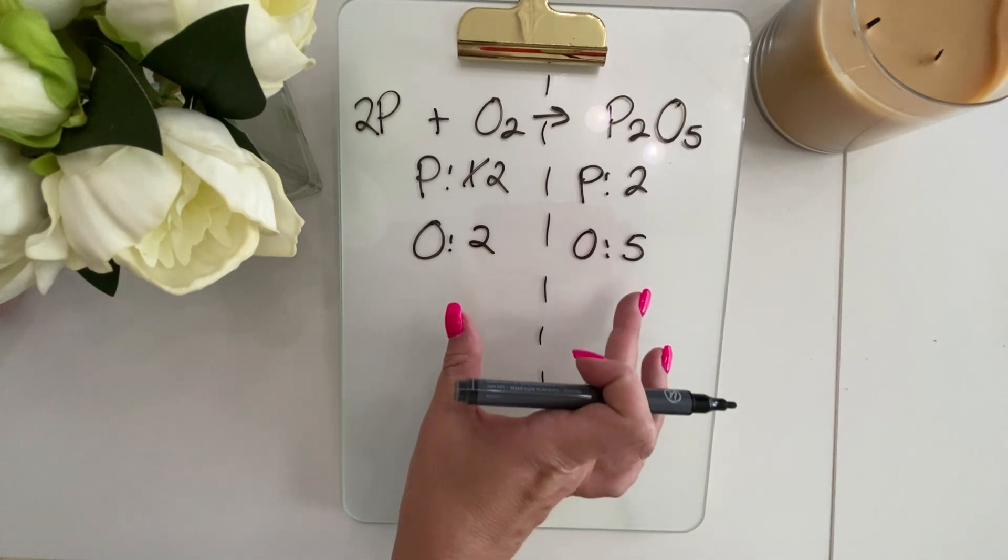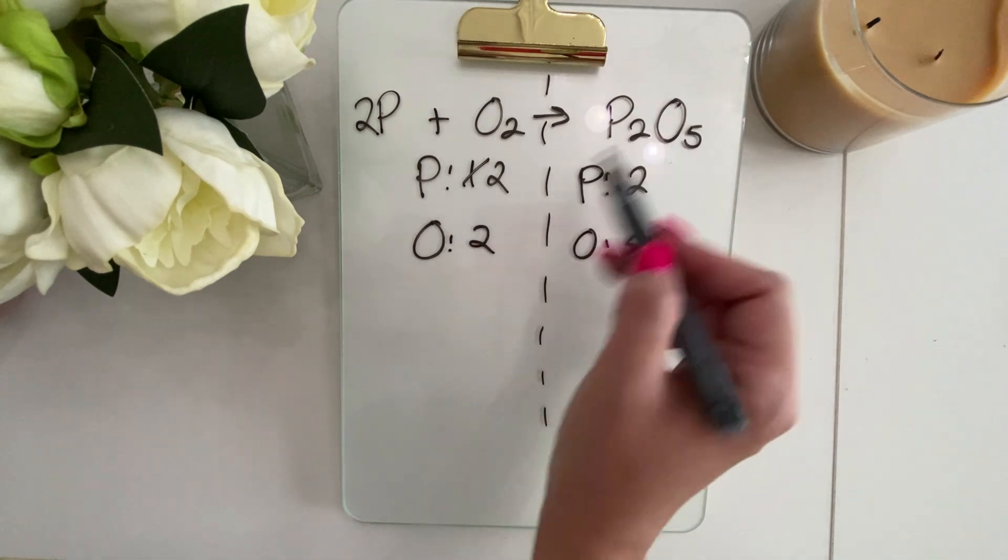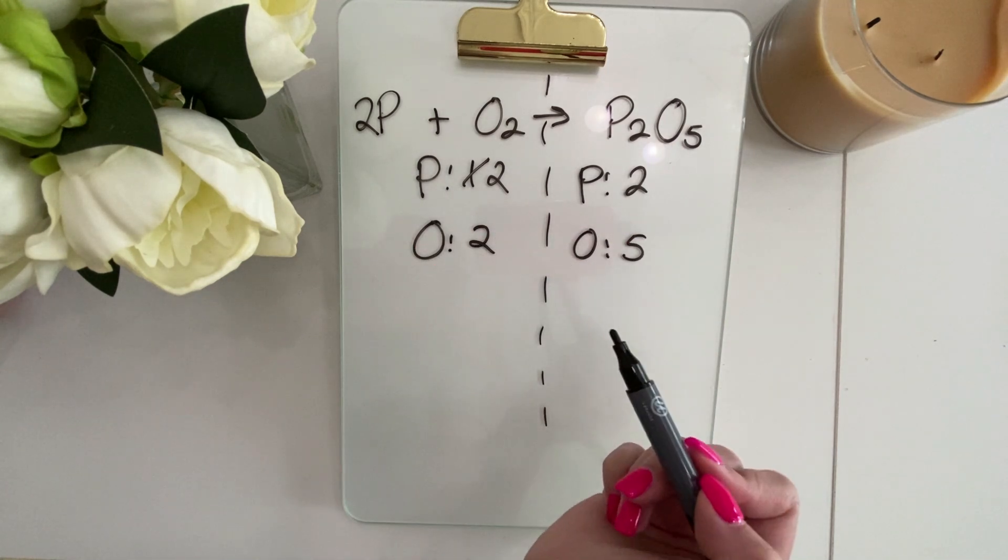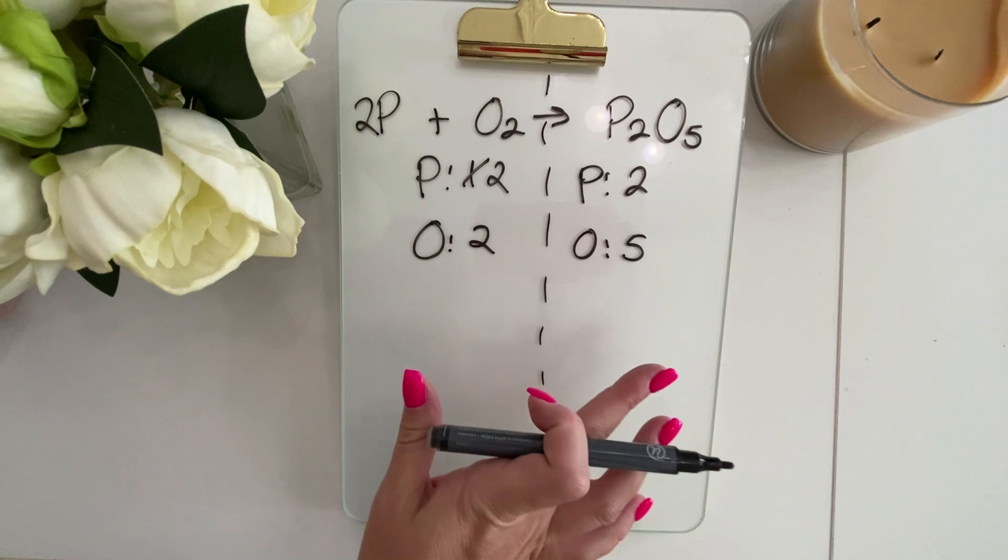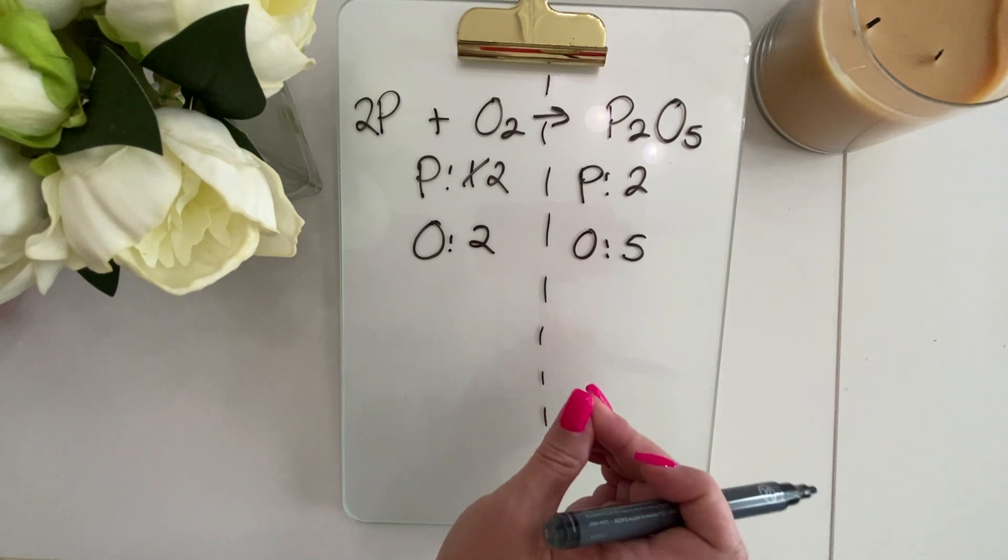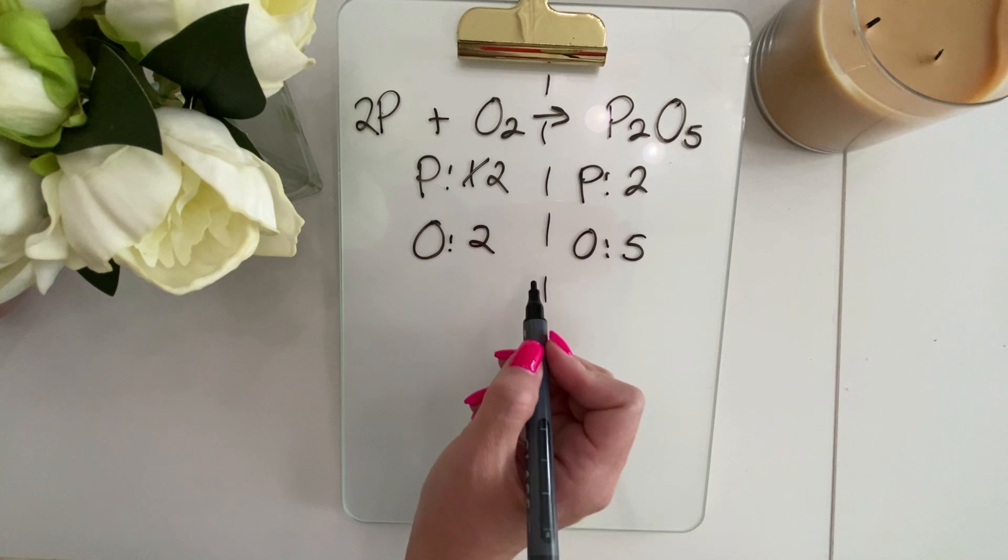the easiest thing to do is to use these numbers on the opposite side as a coefficient, unless there is a lower common multiple that would give you a better solution. So we're going to try that.